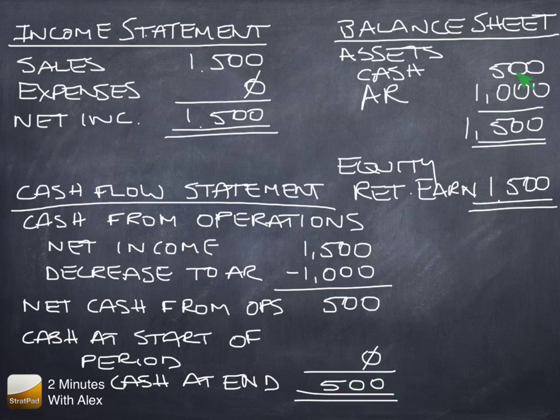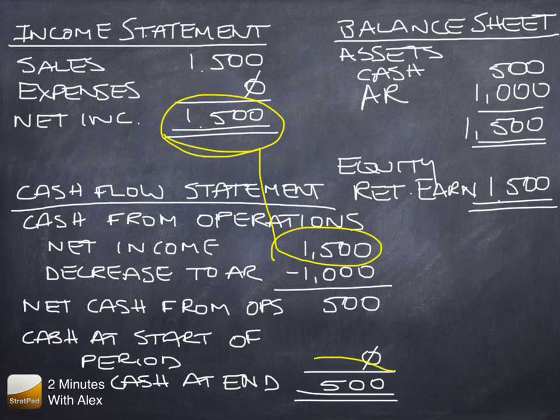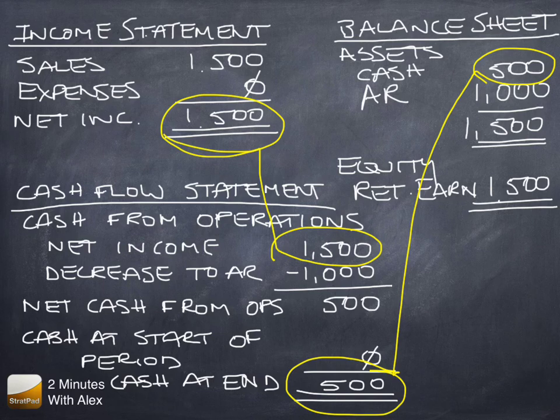That exactly matches the balance sheet account, which leads me to my next point: the statement of cash flows fits perfectly between the income statement and the balance sheet. The last line of the income statement becomes the first line of the statement of cash flows. And the last line of the statement of cash flows becomes the first line of the balance sheet. It's just perfect.